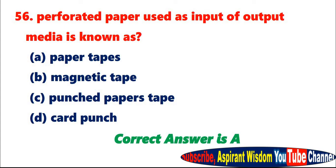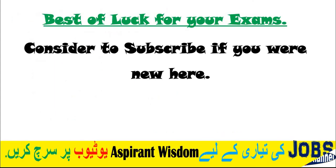Question 56: Perforated paper used as input or output media is known as A. Paper tapes. B. Magnetic tape. C. Punched papers tape. D. Card punch. Correct answer is A. Best of luck for your exams. Consider to subscribe if you were new here.